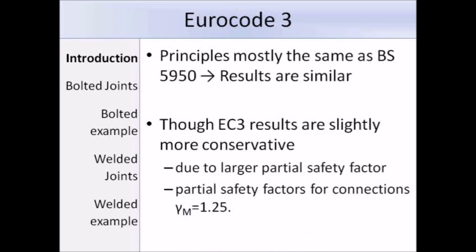Back to the Eurocodes: the principles used for the design of joints are mostly the same as BS 5950, and therefore the results are similar. However, due to a larger partial safety factor for connections of 1.25, the results obtained using Eurocode 3 are slightly more conservative than BS 5950.